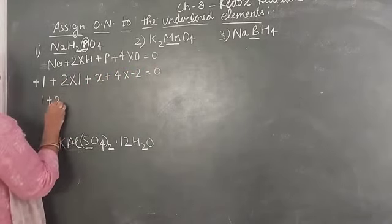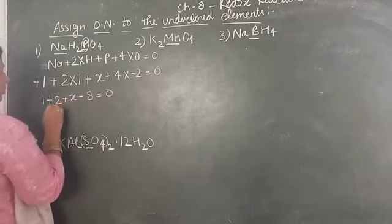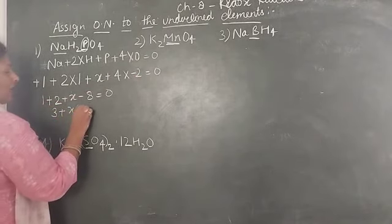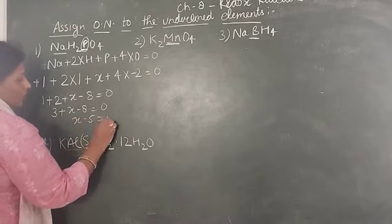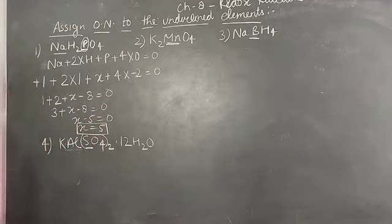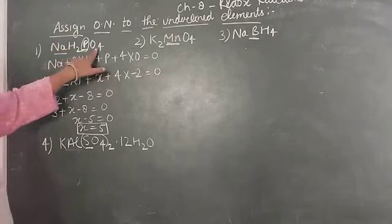2, 1, 2 plus X, 4, 2, 8 equals 0. 2 plus 3, 1, 3 plus X minus 8 equals 0. X minus 5 equals 0, so X equals 5. This is the oxidation number of phosphorus in NaH2PO4.